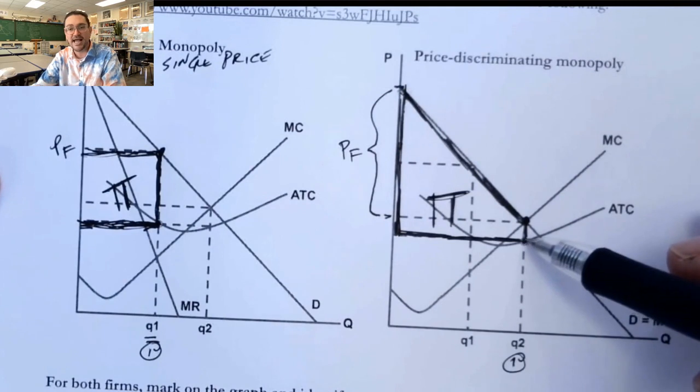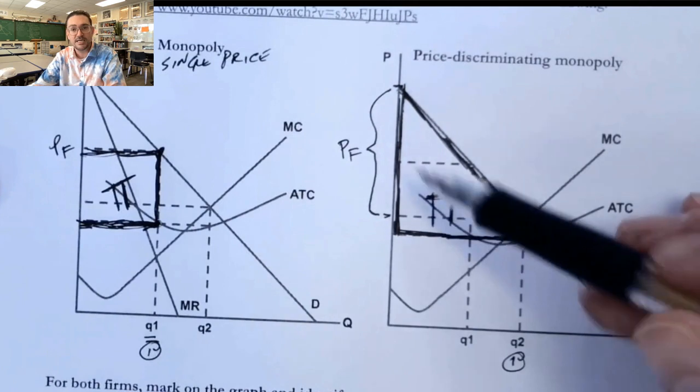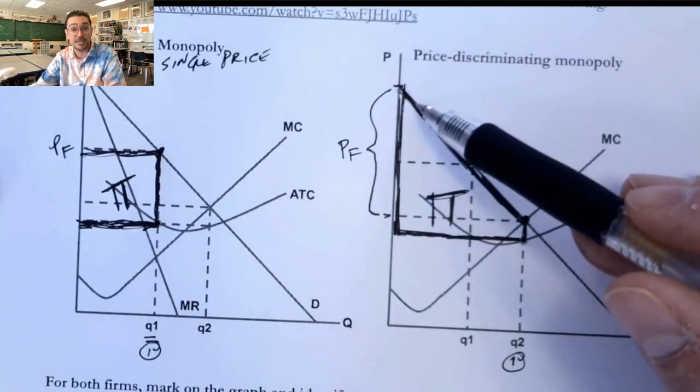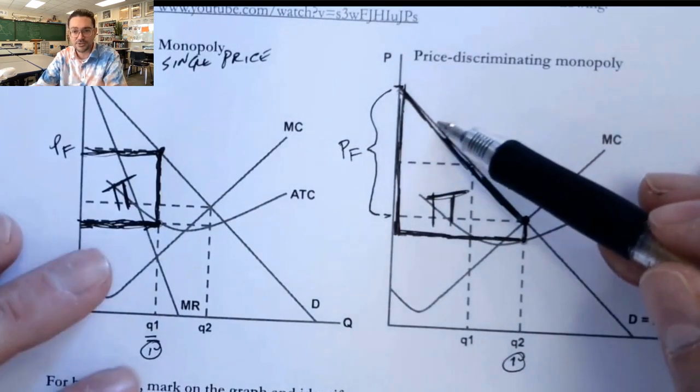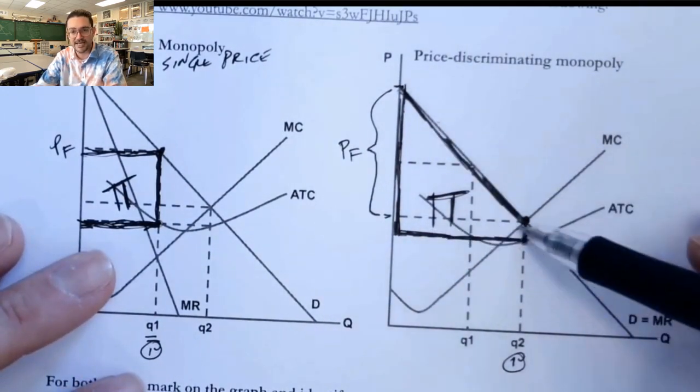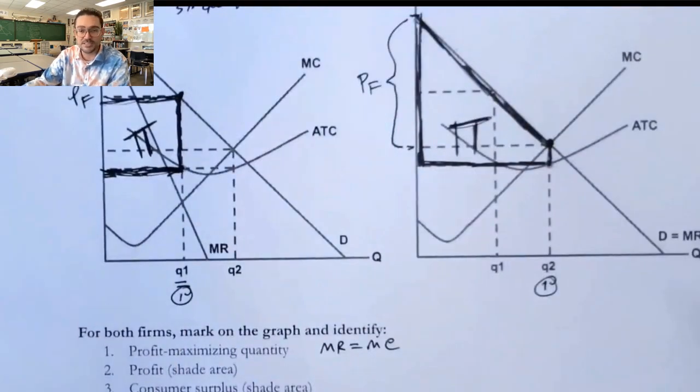What we actually find is what's the average cost of all the units at Q2. The average cost is here. And we charge this person this much, subtract the average cost, that's how much profit from that unit. We charge this person this much, subtract that average cost of the unit. So we make an enormous amount of profit if we're able to actually perfectly price discriminate.